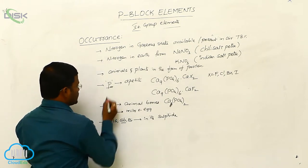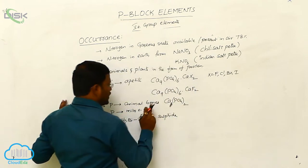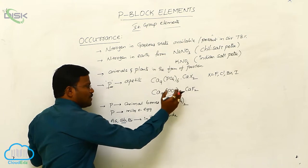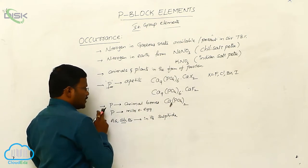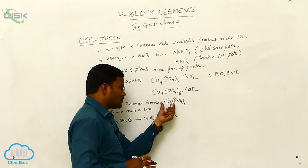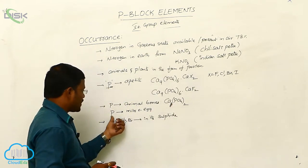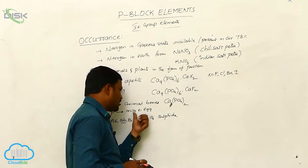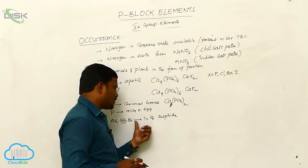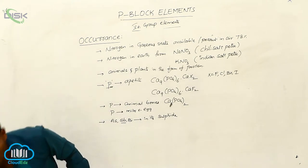And next, phosphorous generally available in its apatite form. Example is Ca9(PO4)6 CaX2. Here, the Ca9(PO4)6 CaF2 is responsible or it is also called as phosphorous rocks. The phosphorous found to present in animal bones. And phosphorous and its derivative, organic derivatives are found to exist in milk and egg. And remaining elements belong to same group like arsenic, stibium and bismuth available in earth in its sulfide forms. This is occurrence of 5A group elements.